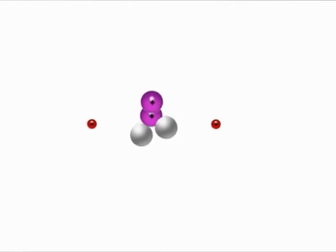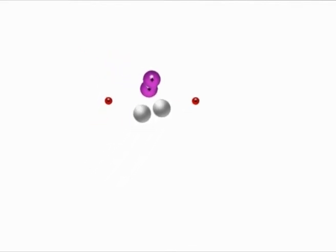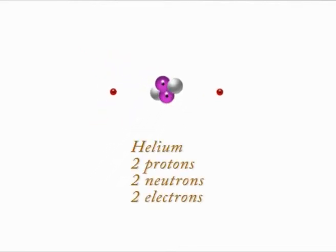An atom always has the same number of protons as electrons and usually the same number of neutrons. For example, helium has two protons, two neutrons and two electrons.